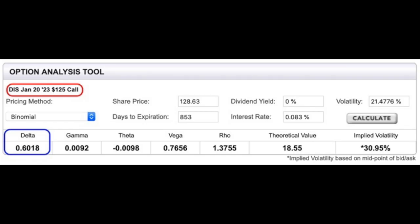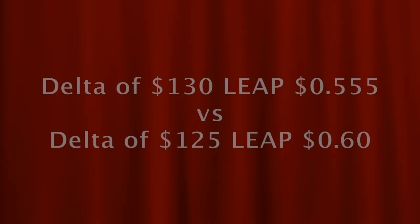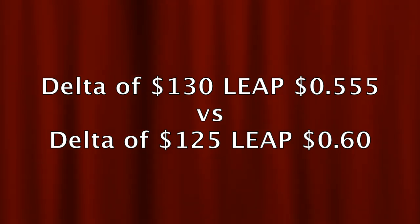Let's say instead of buying the $130 call LEAP, we bought the $125 LEAP with the same January 2023 expiration. Since that option is over $3 in the money, delta is just over 60 cents per share. As the price of the underlying stock increases, our call option becomes more valuable and delta also increases. You don't make a penny-for-penny profit like owning the stock outright, but you're also not out of pocket all the money to buy the stock — just a fraction of what the actual stock would cost.